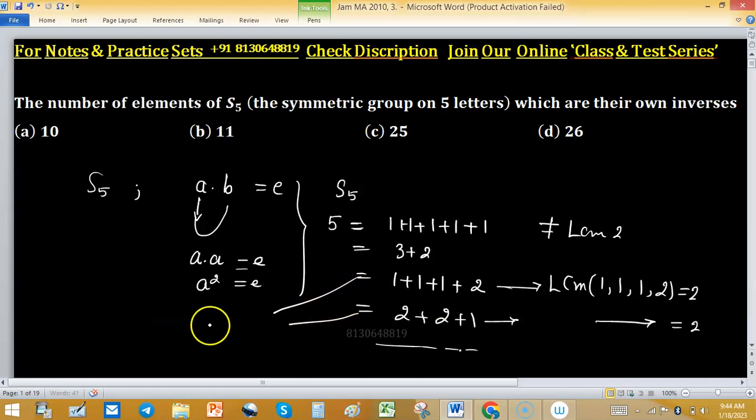Now for this case and this case, we have 5 factorial upon 1 raised to the power 3 times factorial 3, plus 2 raised to the power 1 times factorial 1. Plus, for the second part, 5 factorial upon 2 squared times factorial 2 times factorial 1.